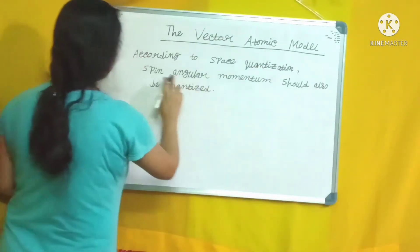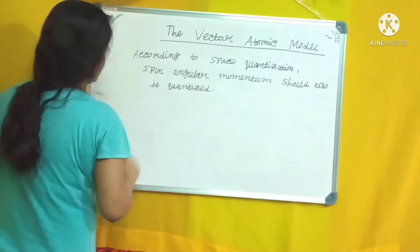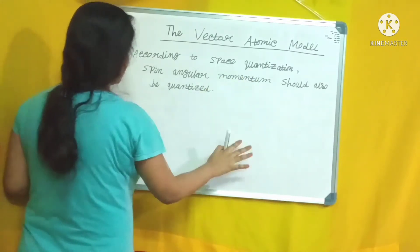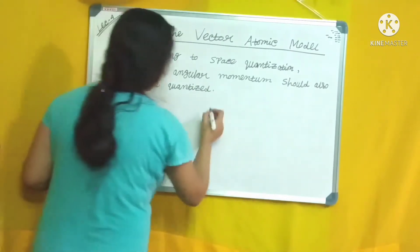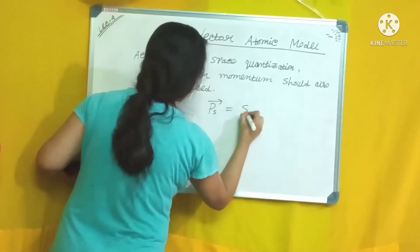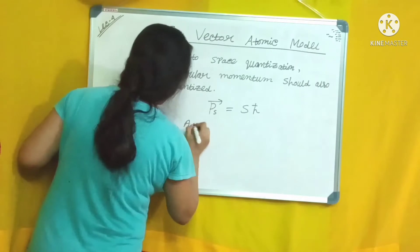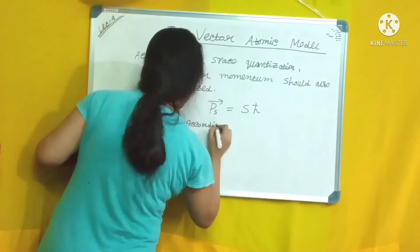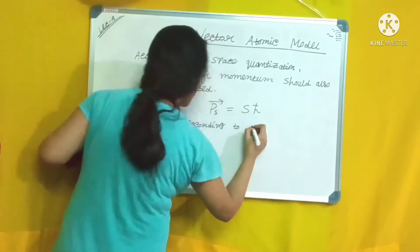According to space quantization, spin angular momentum should also be quantized — just like orbital angular momentum. So ps equals s·ℏ. According to quantum mechanics, the spin angular momentum is given by ps = √(s(s+1))·ℏ.